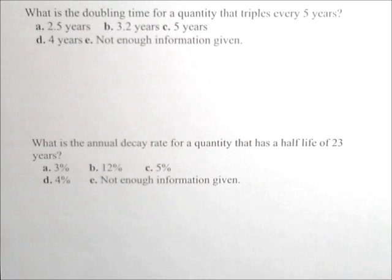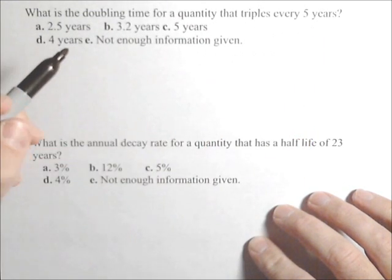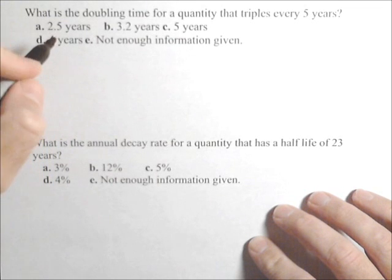We're going to deal with some exponential growth here. First one, we want to find the doubling time for a quantity that triples every five years. I'm going to show you a neat way to set up the equation for this.